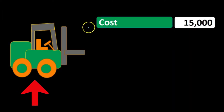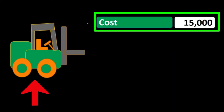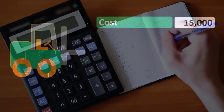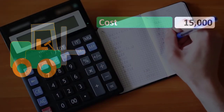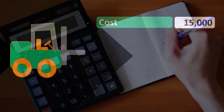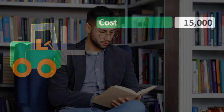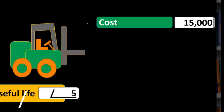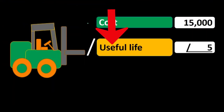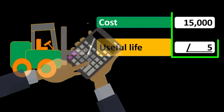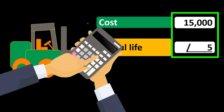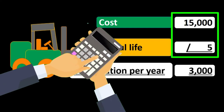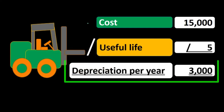If we bought something like the forklift here for $15,000, we put the $15,000 on as property, plants, and equipment — as an asset, not an expense — because we have not yet consumed it. In accordance with the matching principle, it should be an asset. If we then estimate that the useful life is five years for that forklift and divide the $15,000 by five, we say that we are basically using or consuming $3,000 of it per year.